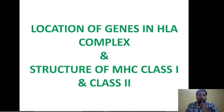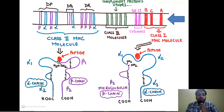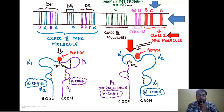Moving ahead — the location of the genes in the HLA complex and the structure of MHC class 1 and class 2. This is a very important diagram showing the gene loci encoding different parts. First we see HLA-A, HLA-B, and HLA-C. These genes code for the class 1 MHC molecule. MHC molecules are of two types: class 1 and class 2. The class 1 MHC molecule is composed of a polymorphic alpha chain — polymorphic because it is composed of three units: alpha 1, alpha 2, and alpha 3 — hence it is a heavy chain.